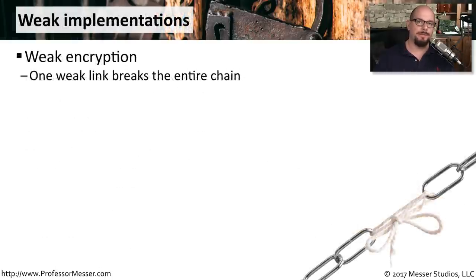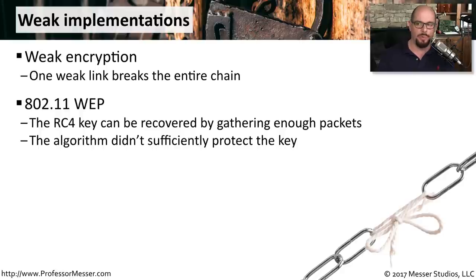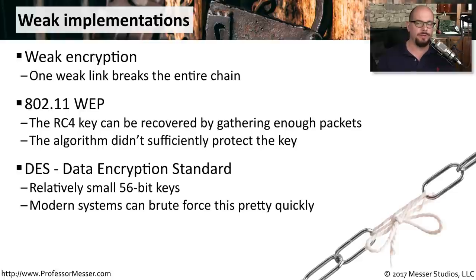We've certainly run into our fair share of weak encryption algorithms through the years. One that we often mention is 802.11 WEP — the wireless encryption protocol — which was very easy to decrypt. In fact, we were able to decrypt a WEP key in this series in less than a second, so obviously that's not an encryption mechanism you would want to use on your wireless network. Another older type of encryption that can now be very easily decrypted is the Data Encryption Standard, or DES. This used very small keys relative to what we're using today — only 56 bits — and modern systems can brute force through 56 bits very quickly, so that's not an encryption standard you'd want to use on your network.